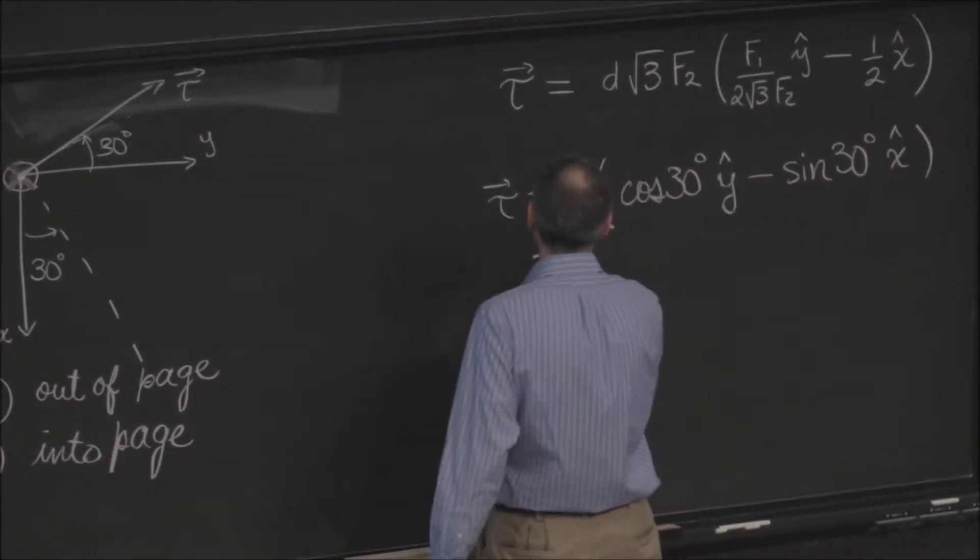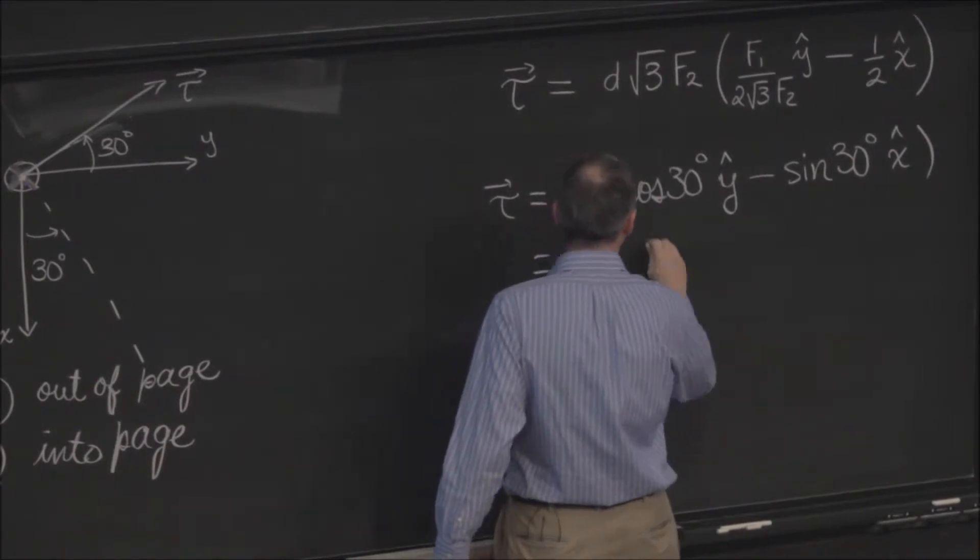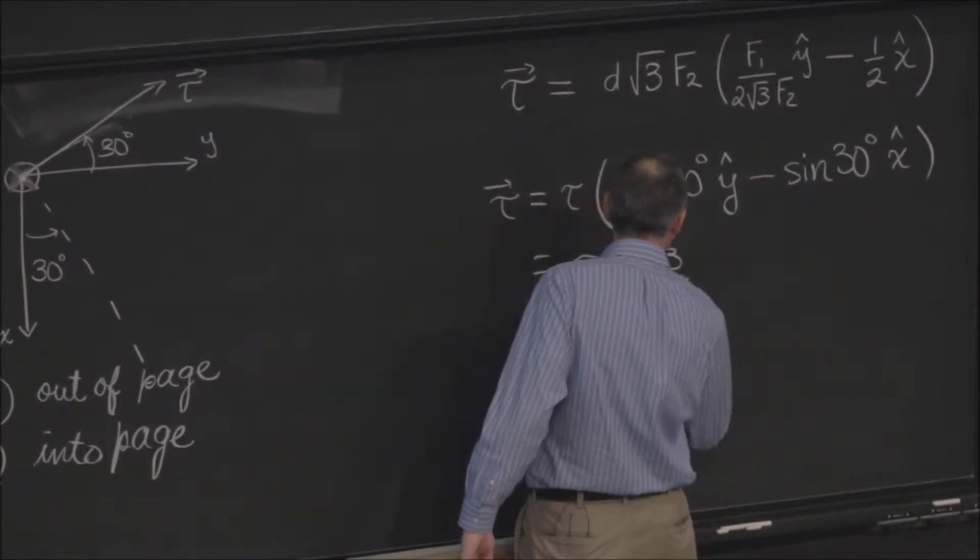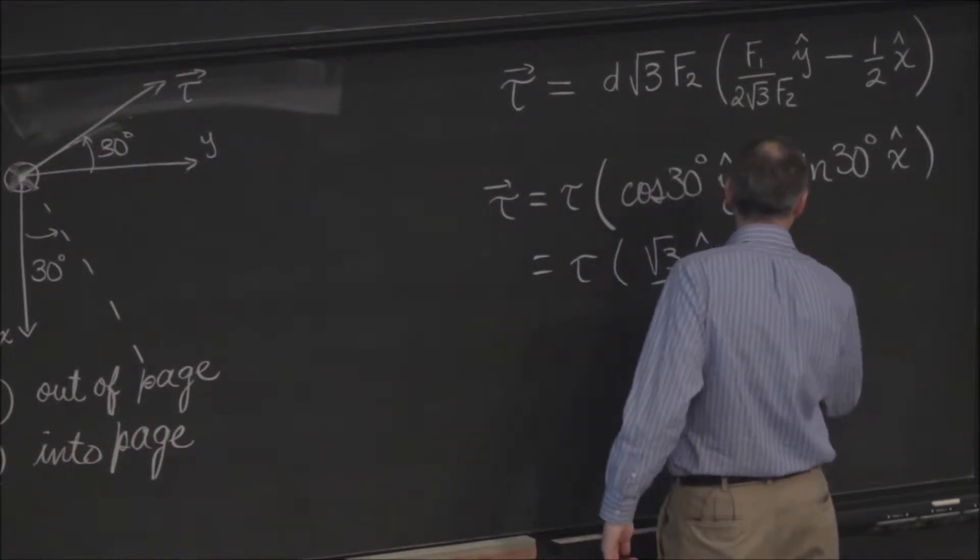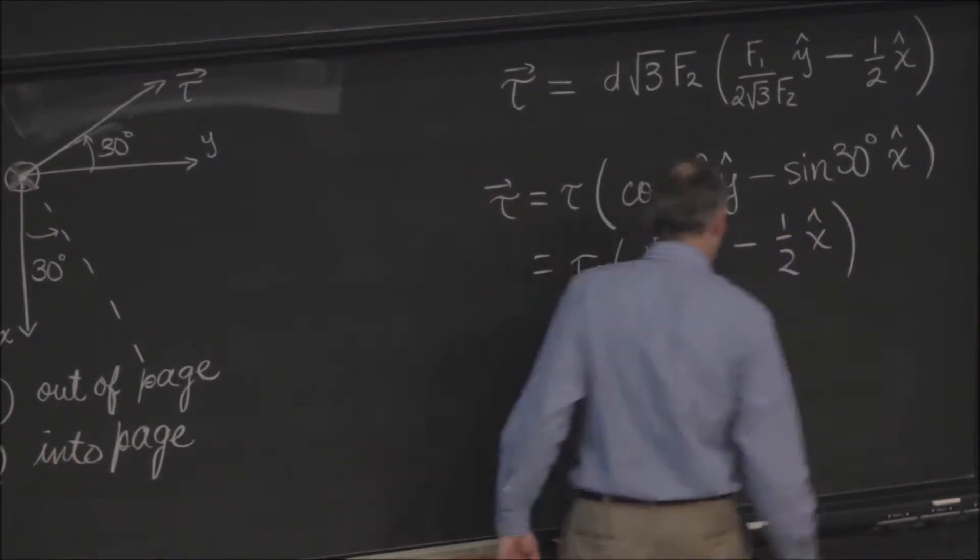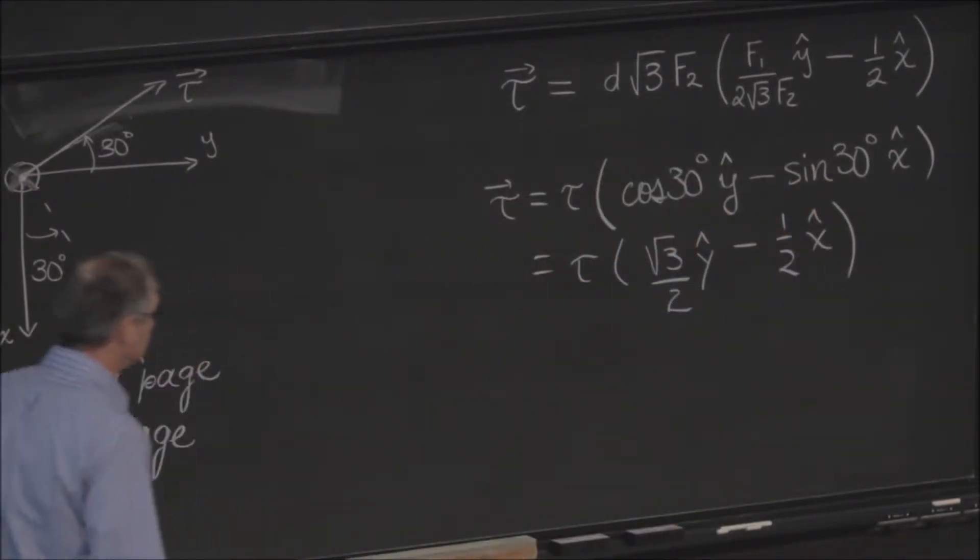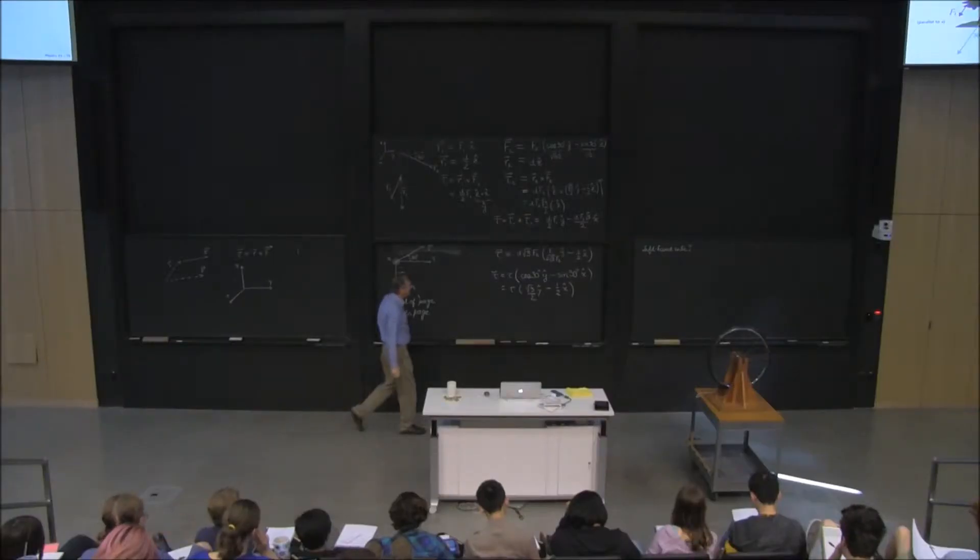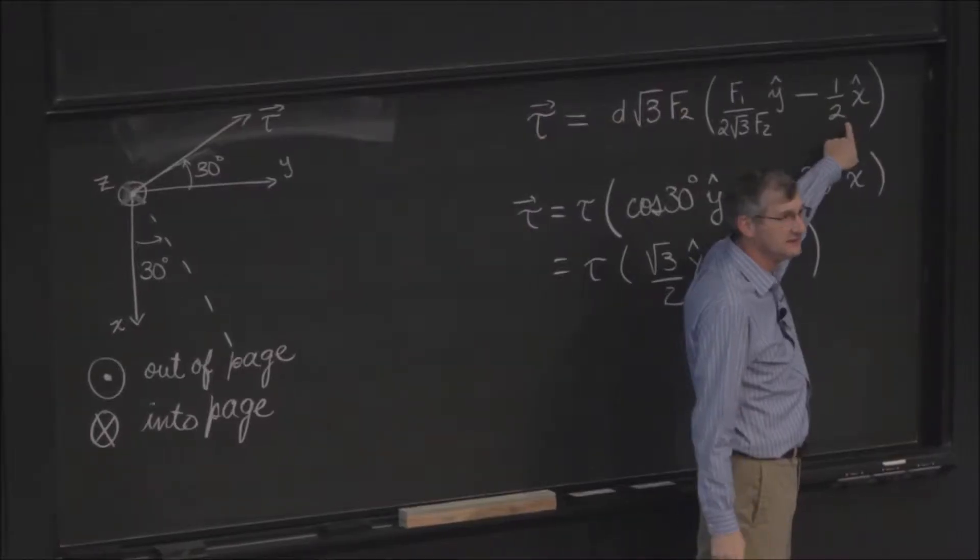So that is to say, root 3 over 2 in the y minus 1 half in the x. So I already have the minus 1 half in the x here.